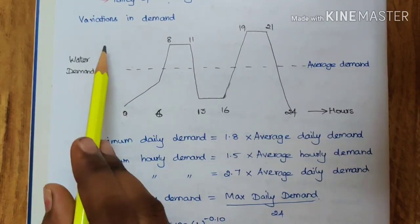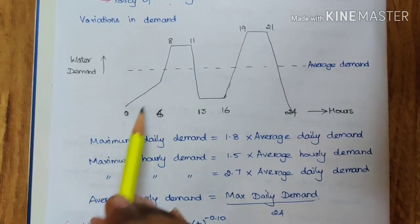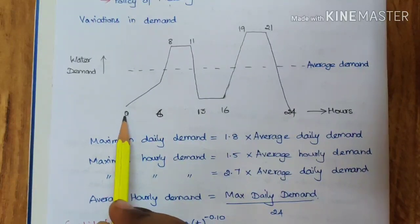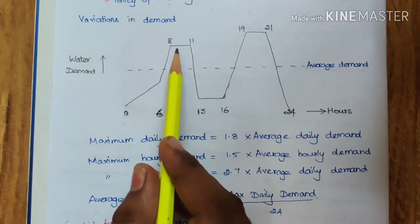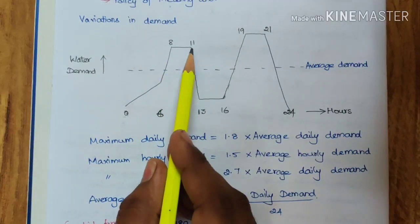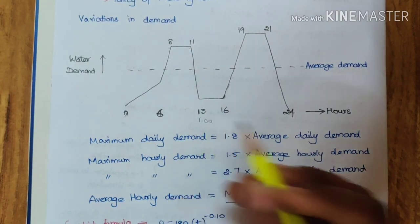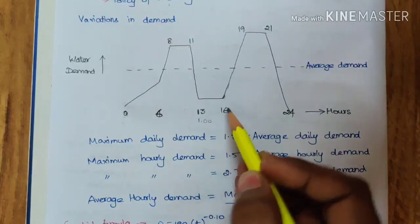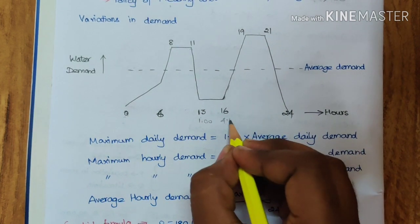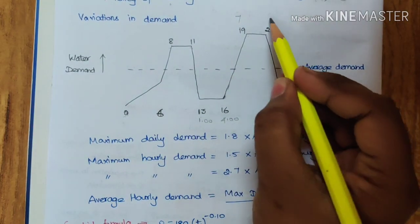The next factor is variations in demand — how water demand varies throughout the daily hours. On a graph with water demand on one axis and hours from 0 to 24 on the other, at midnight (0 hours) consumption is very low. It gradually increases, reaching a peak between 8 to 11 a.m., then gradually decreases around 1 p.m. After that it is maintained at a constant level.